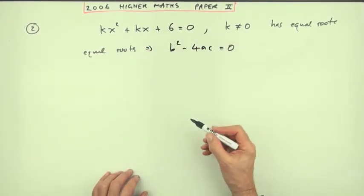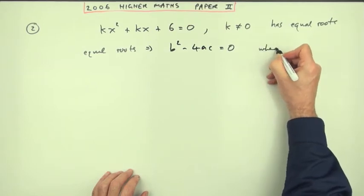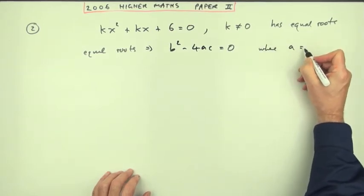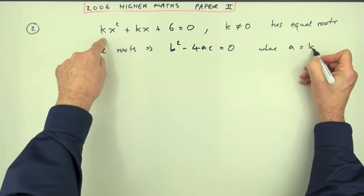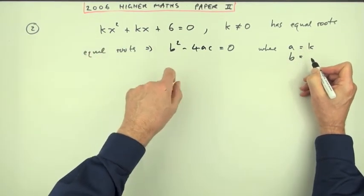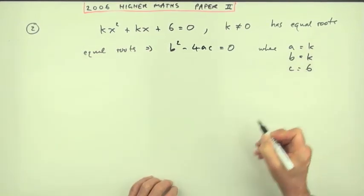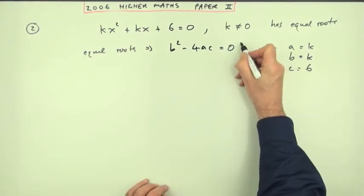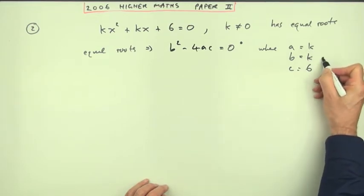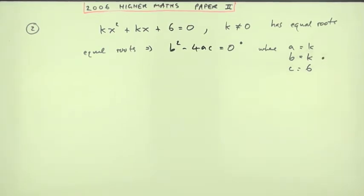Or you may decide to write equal roots means b squared minus 4ac equals zero. But there's no mention of a's, b's, and c's, so you'd probably put in that case where a, being the coefficient of x squared, is k; b, being the coefficient of the middle term x, is also k; and c is 6. If you did that, that would be the first mark and identifying those coefficients would be the second mark.